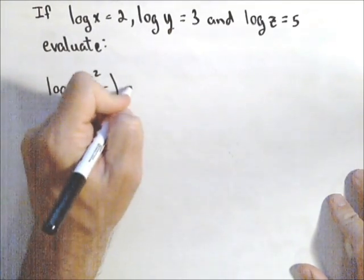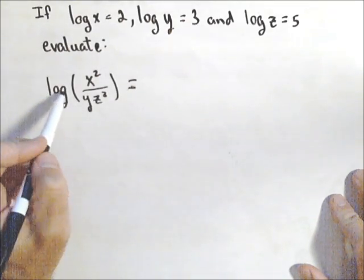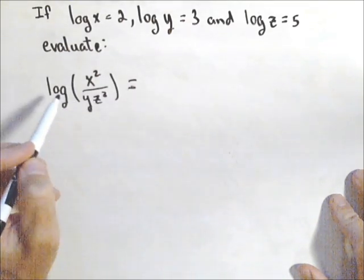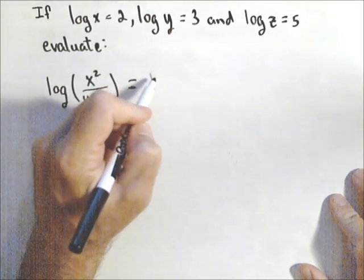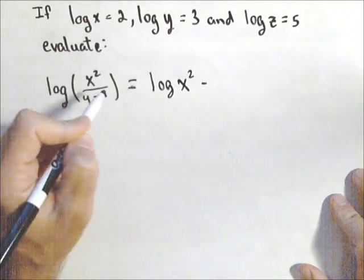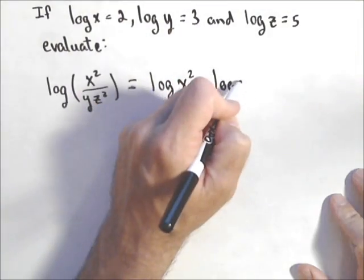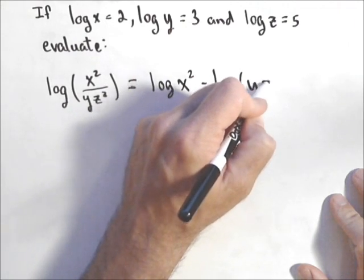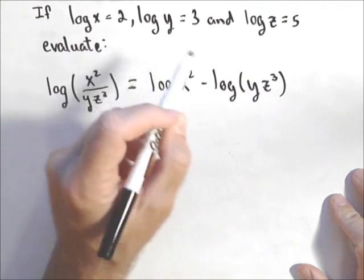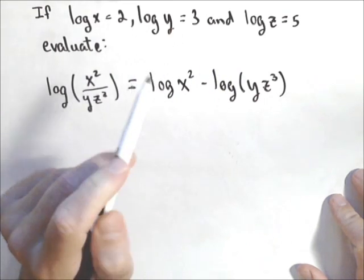First thing we would maybe want to notice here is that we have a quotient. We have x² over yz³. So that could be rewritten as log of x² minus a separate log of yz³. Now, we have to get this all the way down to log x, log y, and log z to be able to put those numbers in and evaluate.